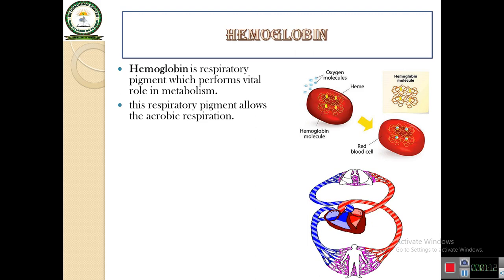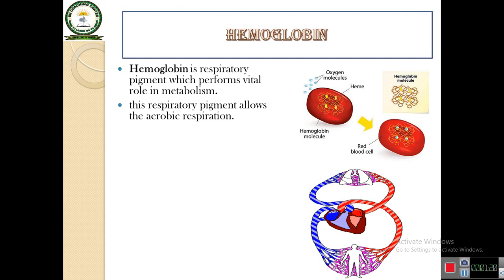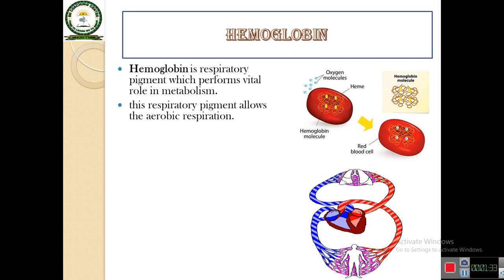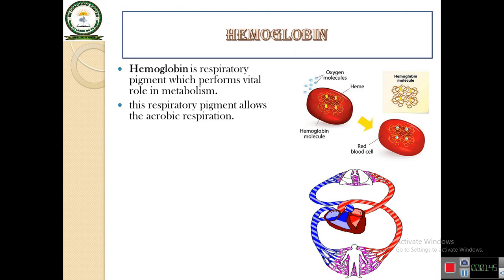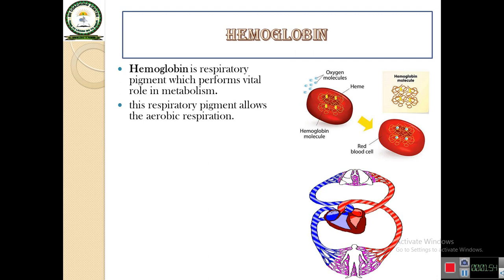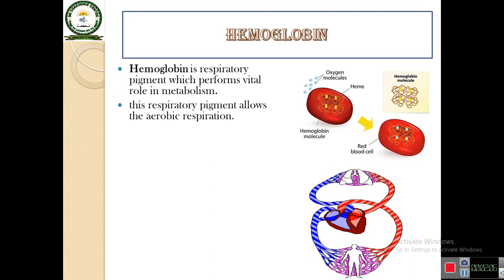This respiratory pigment allows aerobic respiration. Respiration is a process in which glucose is broken down in the presence of oxygen into energy — that means glucose is converted into energy in the presence of oxygen. There are two types of respiration: aerobic respiration and anaerobic respiration. Aerobic respiration is respiration in which oxygen is involved, so oxygen is necessary for aerobic respiration.